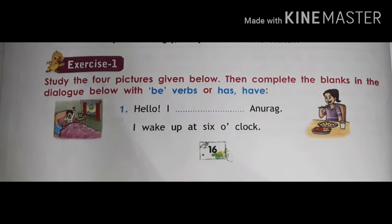Exercise 1: Study the four pictures given below, then complete the blanks in the dialogue below with be verbs or has/have. We have to understand what a be verb is. Be verb stands for is, am, are, was, were. This I have already told you in the previous video.